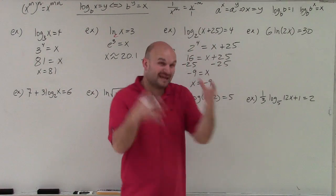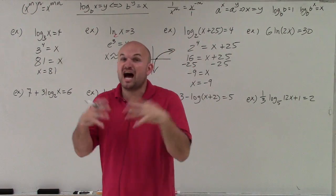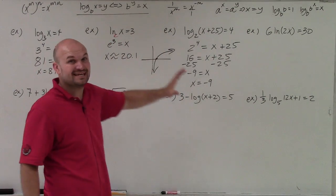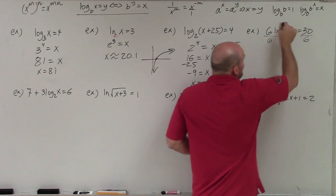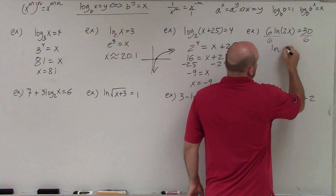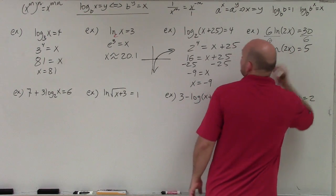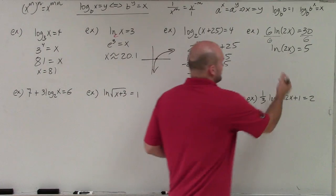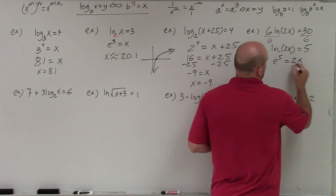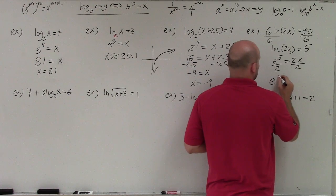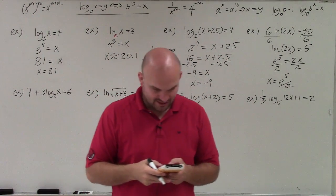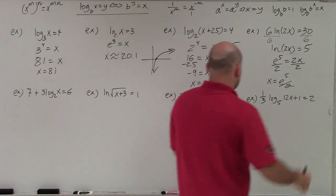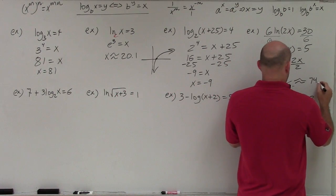In this case, I'm multiplying by 2 inside the function, but I'm also multiplying by 6 outside the function, so the function is not isolated. To isolate it, I divide by 6 on both sides — I don't need to divide by 2 because that's inside the function. So I have ln of 2x equals 5. Now I convert to exponential form, then divide by 2 on both sides: x equals e to the fifth divided by 2, which is approximately 74.2.